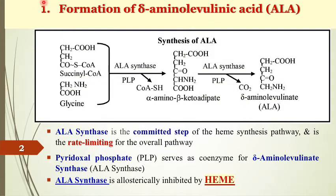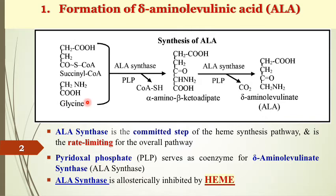The first enzymatic reaction is the synthesis of delta-aminolevulinic acid (ALA). The precursors are succinyl CoA, derived from the Krebs cycle, and glycine, an amino acid obtained from the diet. Biosynthesis of heme belonging to hemoglobin occurs only in the bone marrow.